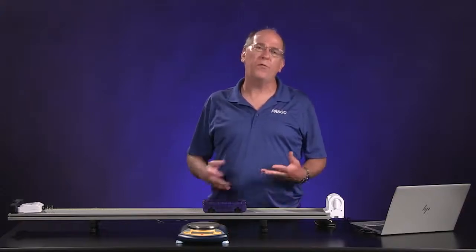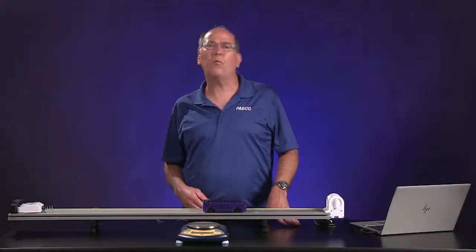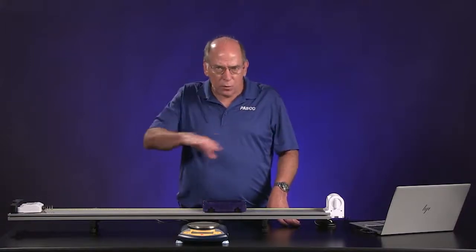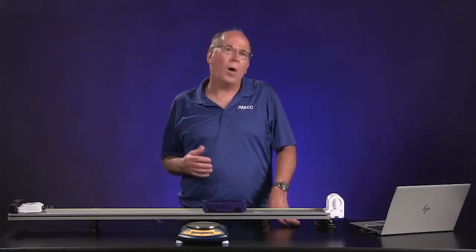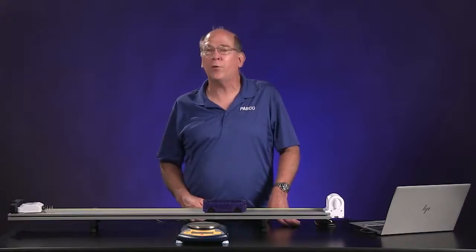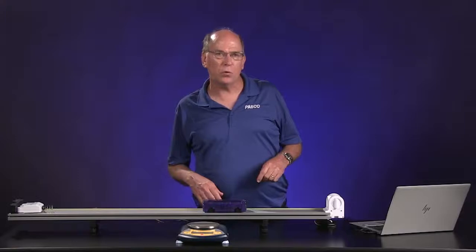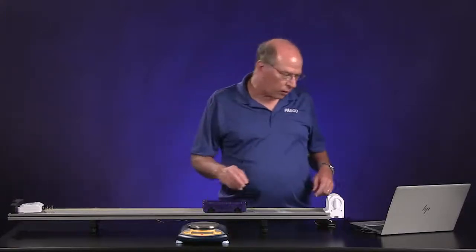We need to collect data for four to five more trials that have a variety of initial velocities of the cart. I'm going to gradually change the push I give it, monitoring the values of the initial velocity as I go. Once we have at least five trials with a variety of initial velocities, we can start the analysis.